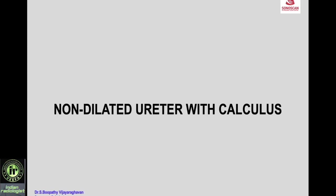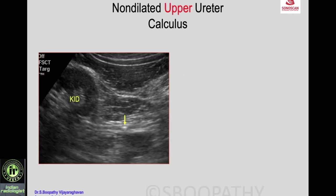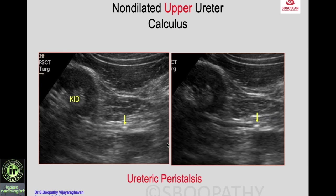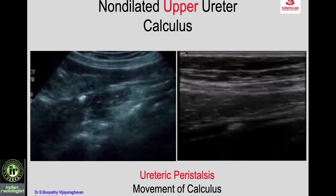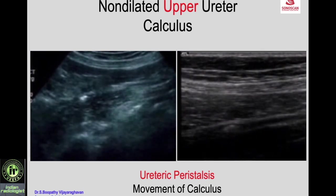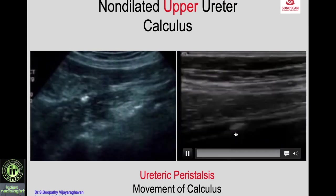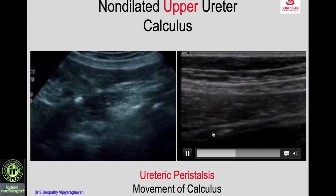How to pick up a calculus in a non-dilated ureter: a patient presents with history of ureteric colic or hematuria, X-ray shows a calculus, and because of acute obstruction the ureter is not dilated. But you can still see the kidney and the ureter with a calculus. If the ureter is not made out, wait for some time — there will be ureteric peristalsis. The ureter will distend and you will confirm the calculus in the upper ureter. The video shows the calculus and the typical movement with peristalsis, confirming it is in the ureter.